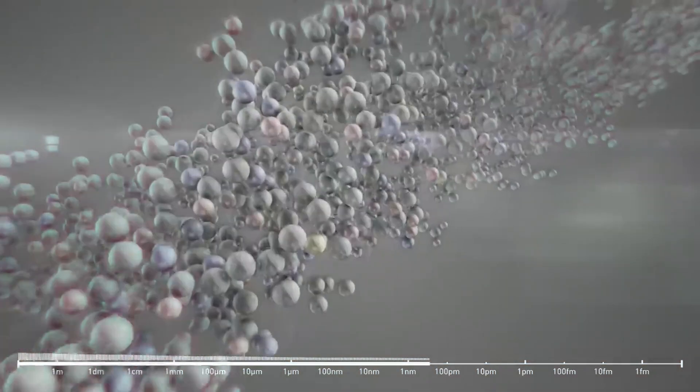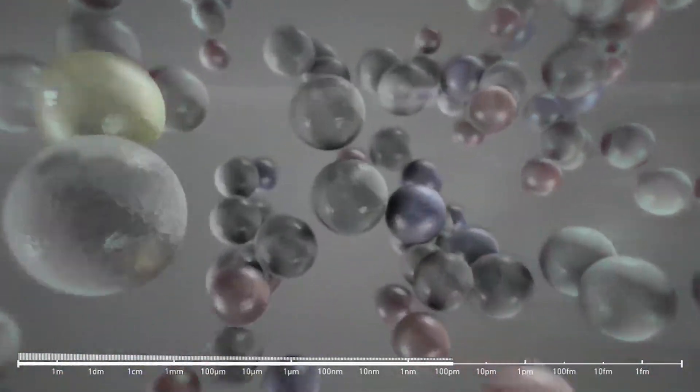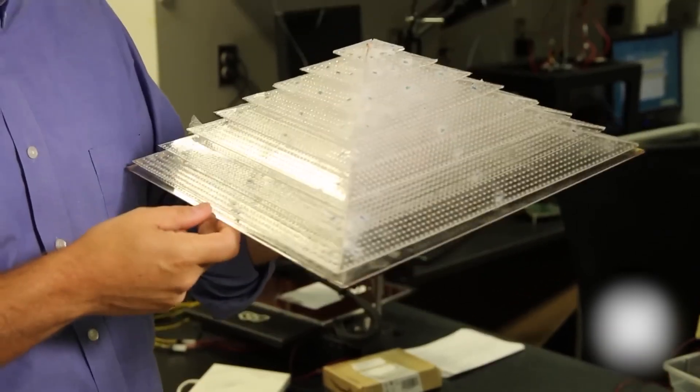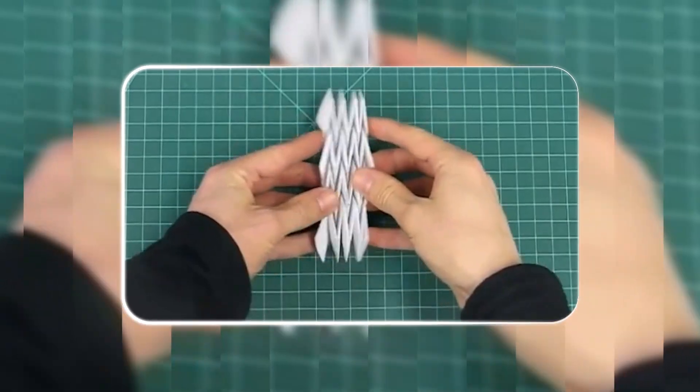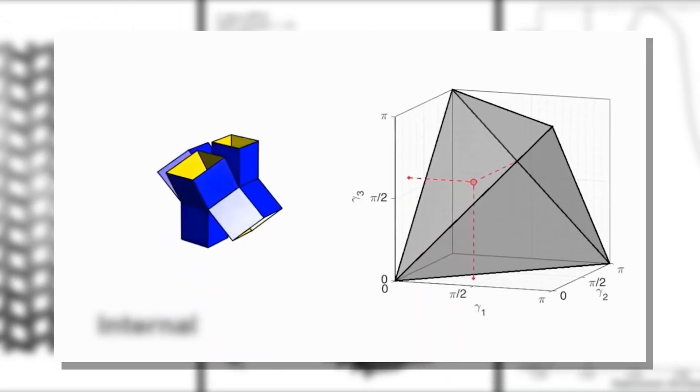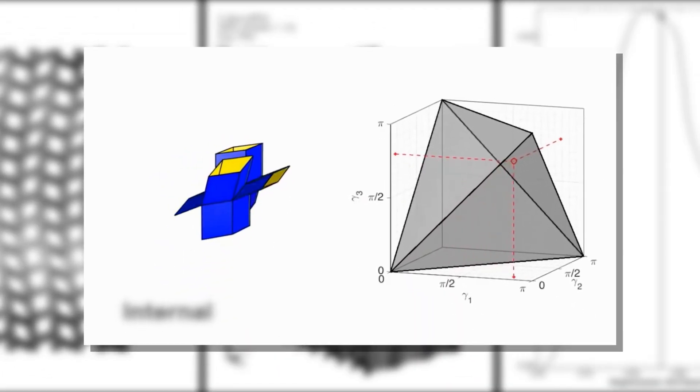You've probably heard of materials that are strong, flexible, or heat-resistant. But metamaterials are something entirely different. These aren't just materials defined by what they're made of. They're defined by how they're made. Their properties come from their internal structure, not their chemical composition.